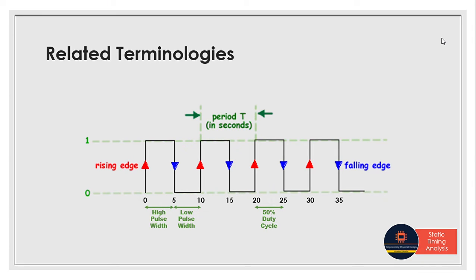In the previous tutorial, we discussed rising edge, falling edge, clock period, pulse width, and duty cycle. We've seen that this is one clock cycle or clock period. Rising edge is when the signal rises from low to high, and falling edge is when it falls from high to low.